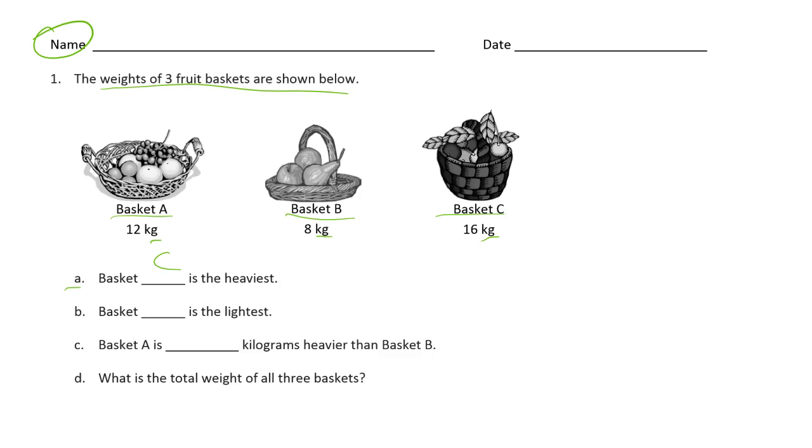Which one is the lightest? That's basket B, that's only 8. So B. Basket A is heavier than basket B. A is 12 and B is 8. But how much heavier exactly is it? The difference between A and B is the difference between 12 and 8, which is 4 kilograms heavier. 9, 10, 11, 12.